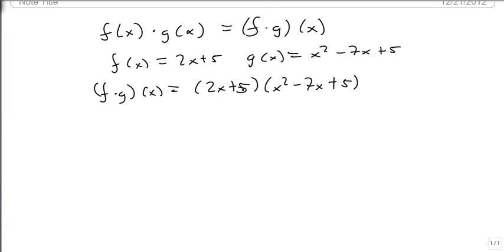So we're going to multiply a trinomial by a binomial. And so I'm going to kind of steal from factoring a little bit. And I'm going to do the 2x squared, or 2x times x squared, which will give me 2x cubed minus 14x squared plus 10x.